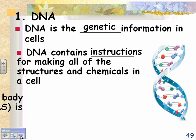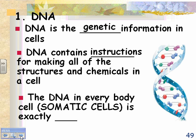DNA is in every body cell. A body cell is also called a somatic cell. That's different from a gamete. A gamete is found in the ovaries or the testes and has exactly half the DNA of a somatic cell. A somatic cell is any regular body cell — a liver cell, kidney cell, skin cell, brain cell, or blood cell.